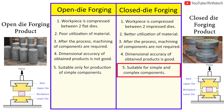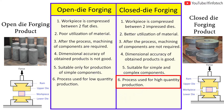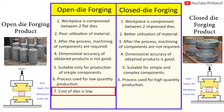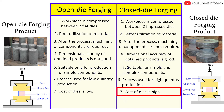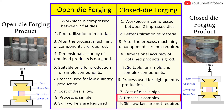For low quantity production, open die forging is used, and for high quantity production, closed die forging is used. The cost of dies in open die forging is low compared to closed die forging. Open die forging is also simpler as compared to closed die forging.